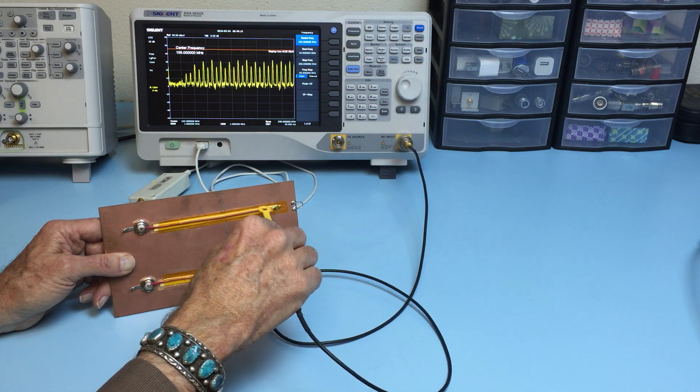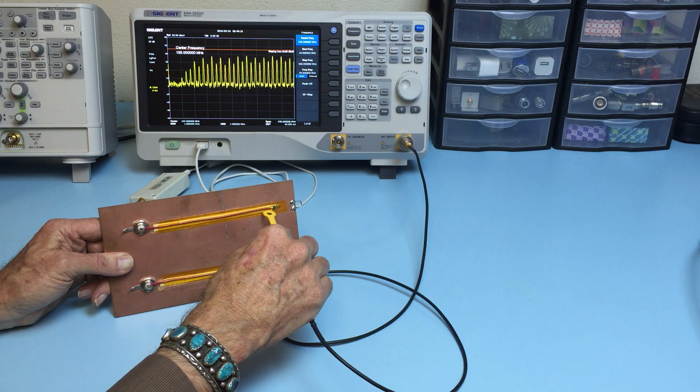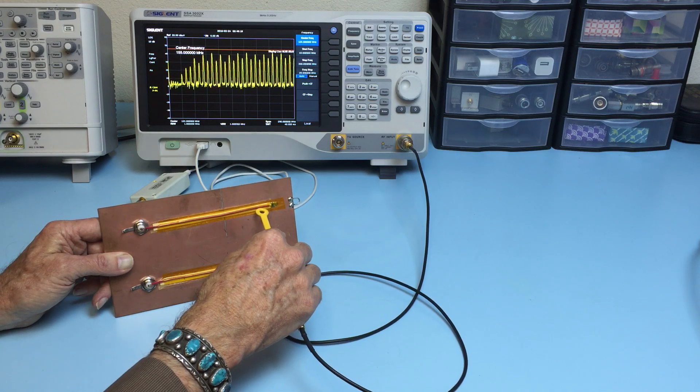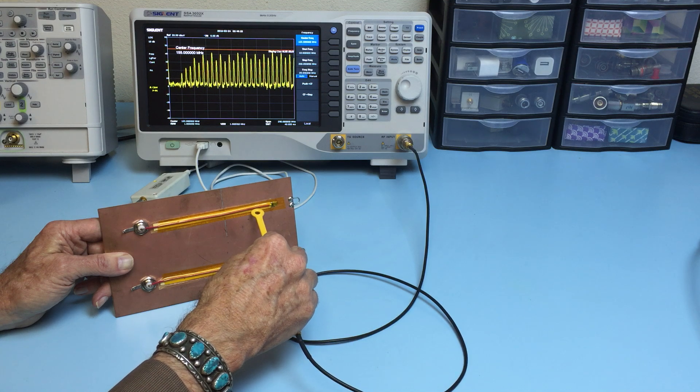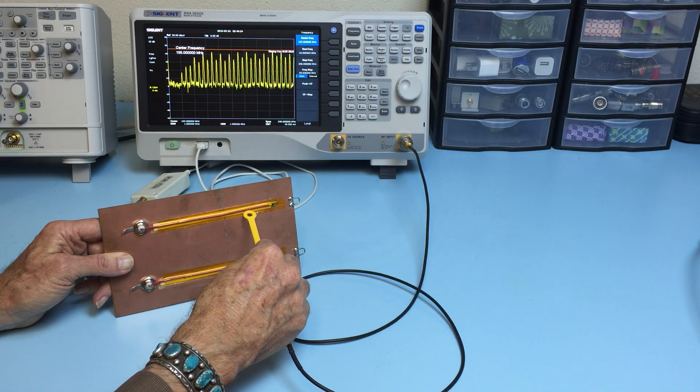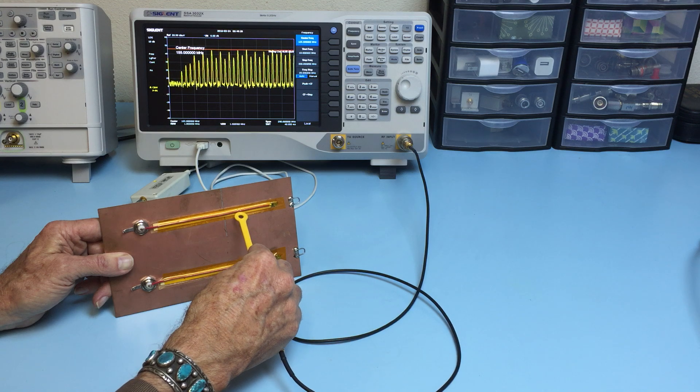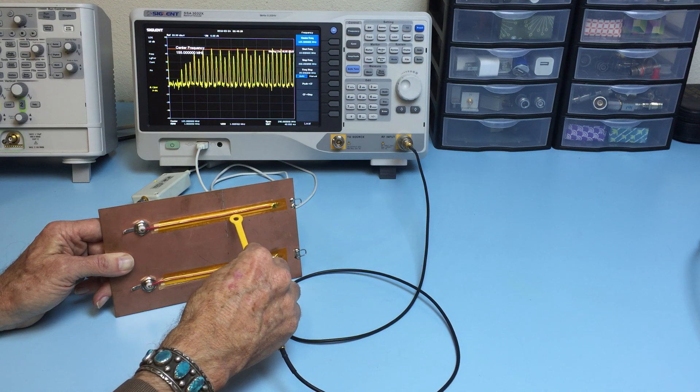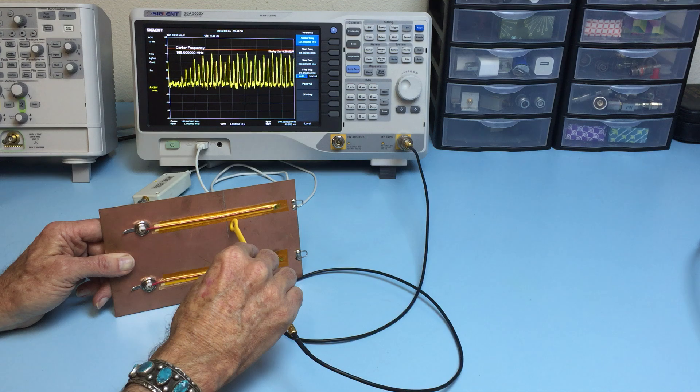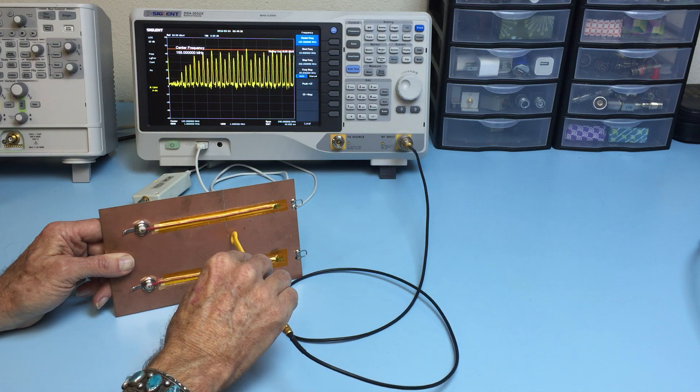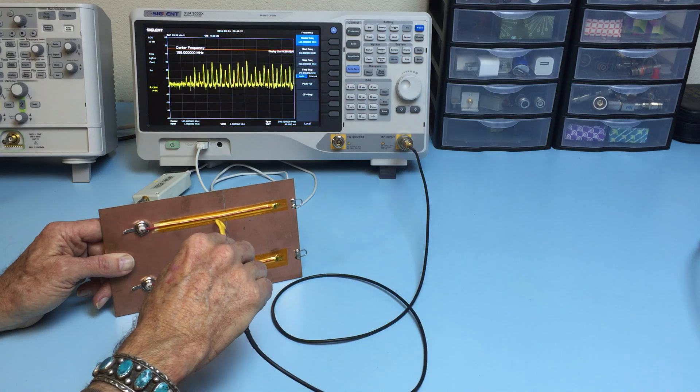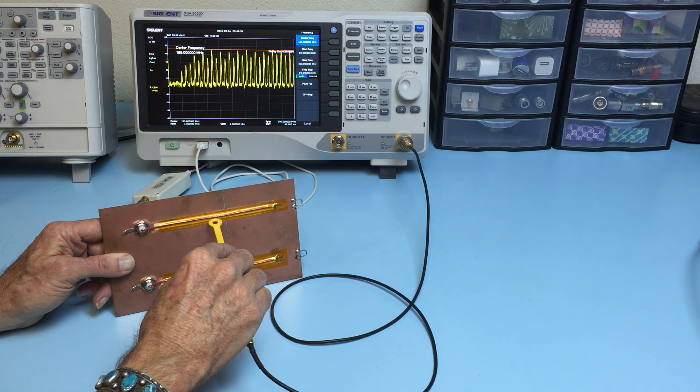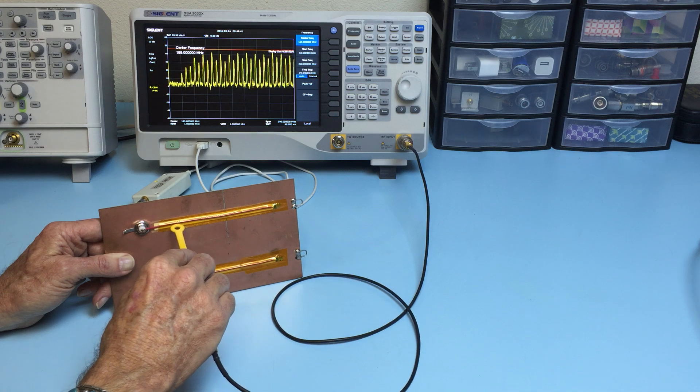But watch what happens when I probe the return current. Now remember from the module, return current is going to want to flow directly under the clock trace, right? So as we get up to the gap, note that I can actually trace the path of the return current right around that gap. Isn't that interesting? And then it goes back to the source.